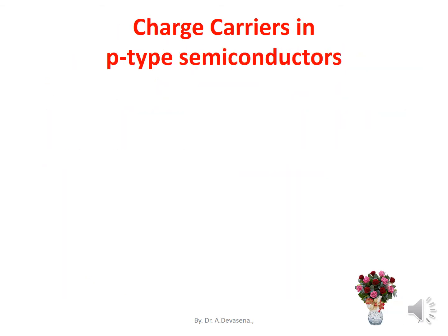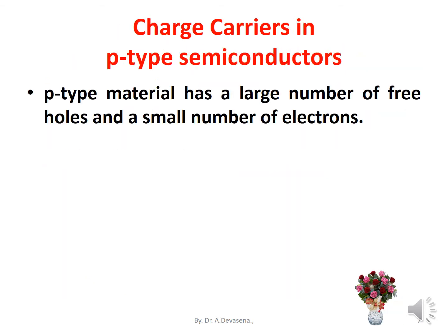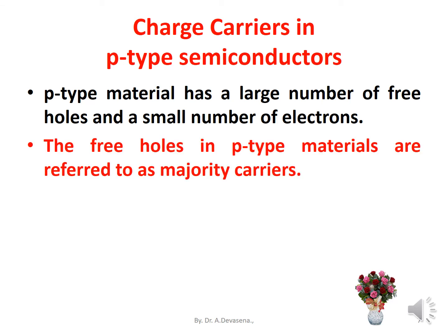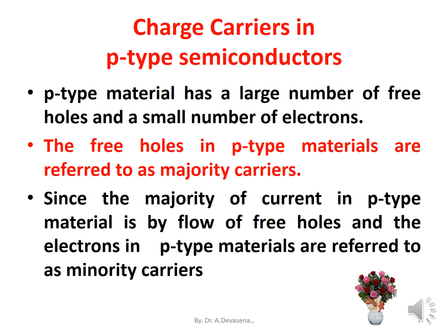Charge carriers in P-type semiconductors: P-type material has a large number of holes and a small number of electrons. The free holes in P-type materials are referred to as majority carriers, since the majority of current in P-type material is by flow of holes. The electrons in P-type materials are referred to as minority carriers.